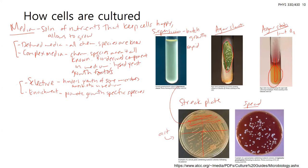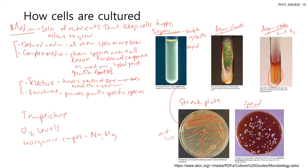In all culturing methods, it's important to know what makes your cells happy: temperature, oxygen levels, inorganic compounds like sodium and magnesium. If you're using a different cell line than what's in the literature, you likely won't use the same conditions — culturing requirements are quite specific and finicky for different cell types.